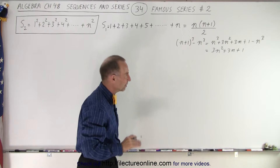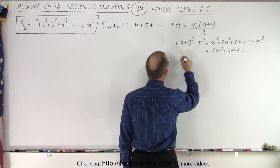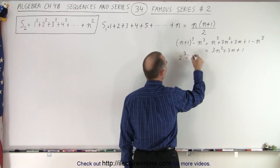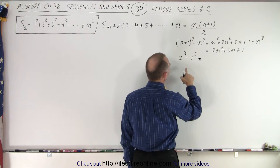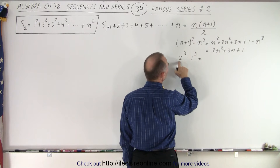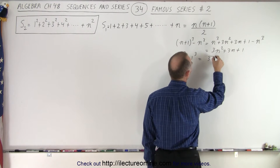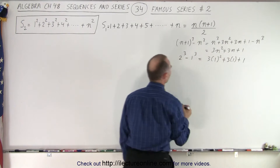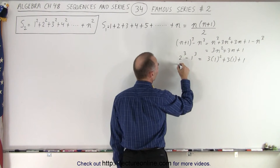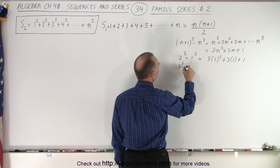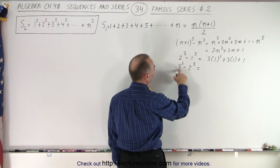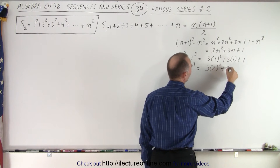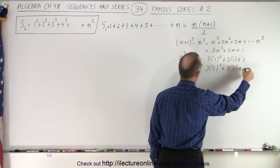Now we continue this trick. Notice that 2 cubed minus 1 cubed — here n is equal to 1 — so that equals 3 times 1 squared plus 3 times 1 plus 1. Then 3 cubed minus 2 cubed — here n is equal to 2 — gives us 3 times 2 squared plus 3 times 2 plus 1.